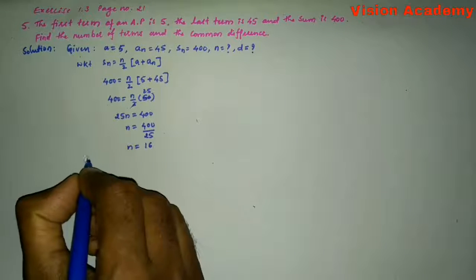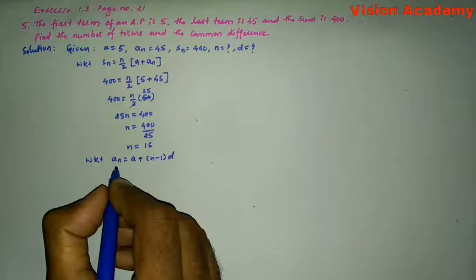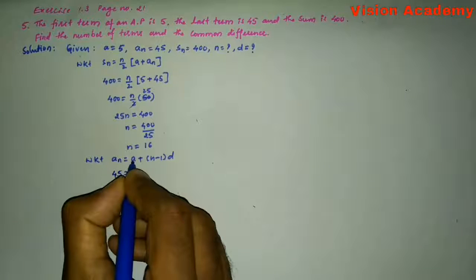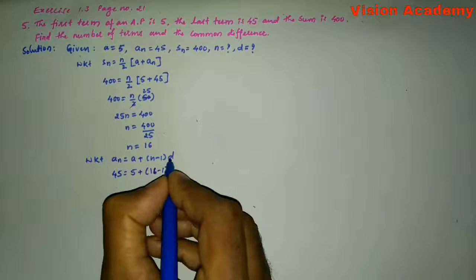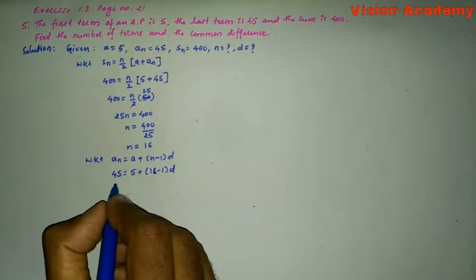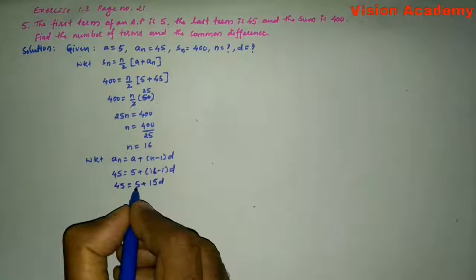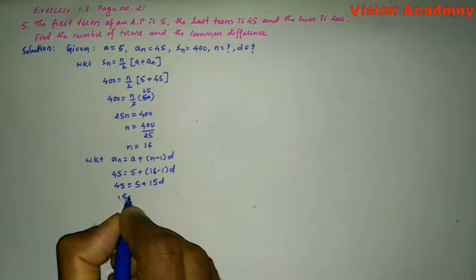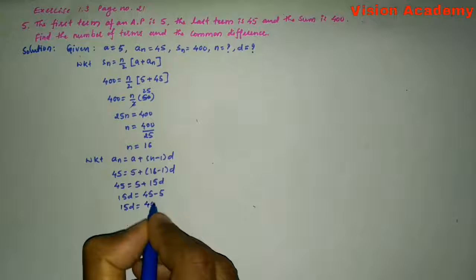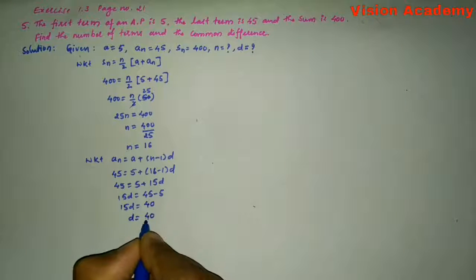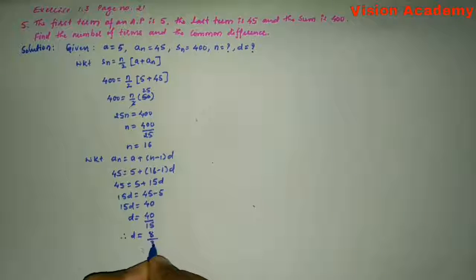Now we know that An equals A plus (n minus 1) D. Substituting: 45 equals 5 plus (16 minus 1) D, which gives 45 equals 5 plus 15D. Transforming 5 to the LHS: 15D equals 45 minus 5, so 15D equals 40. Therefore D equals 40 divided by 15, which gives D equals 8 by 3.